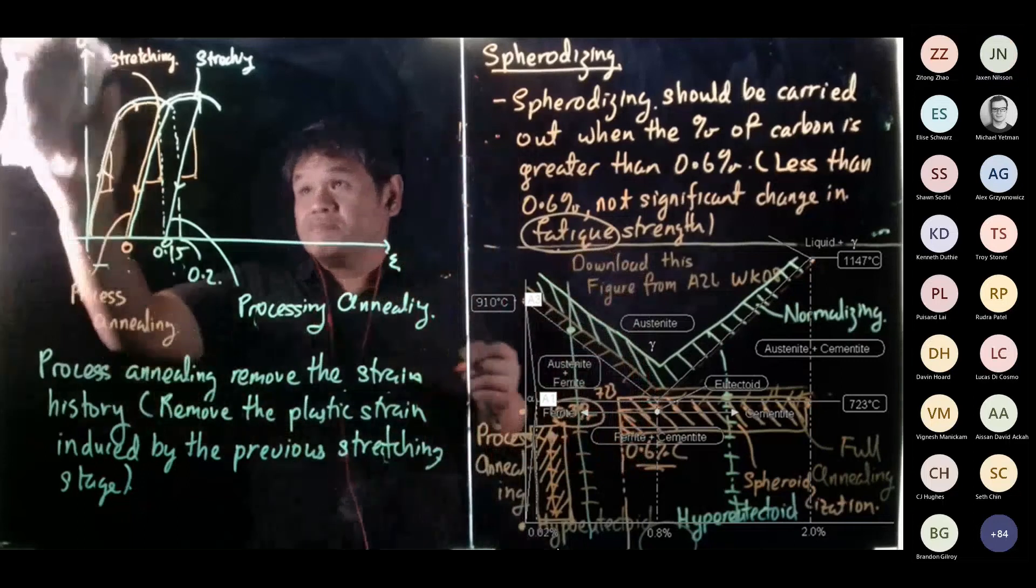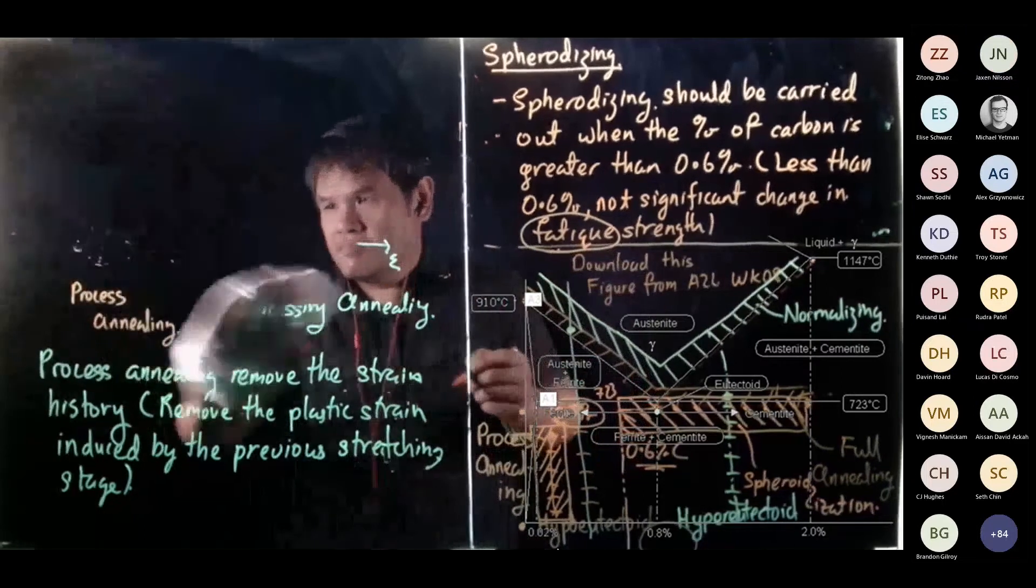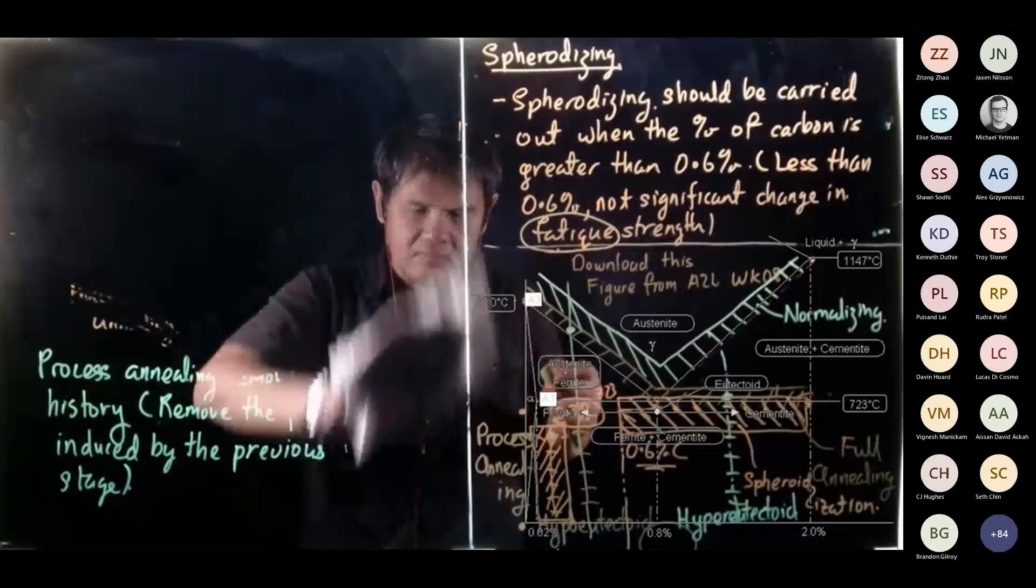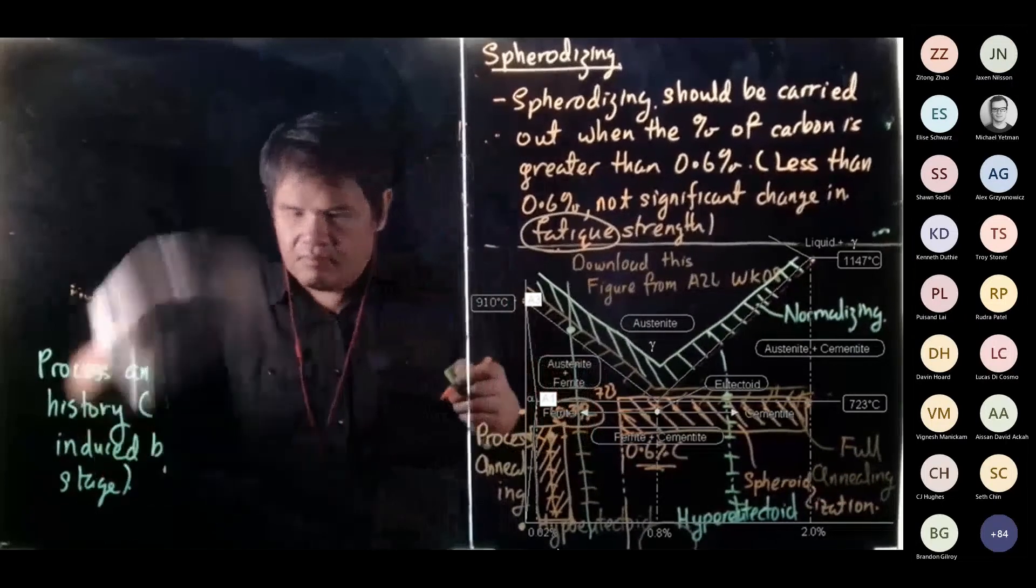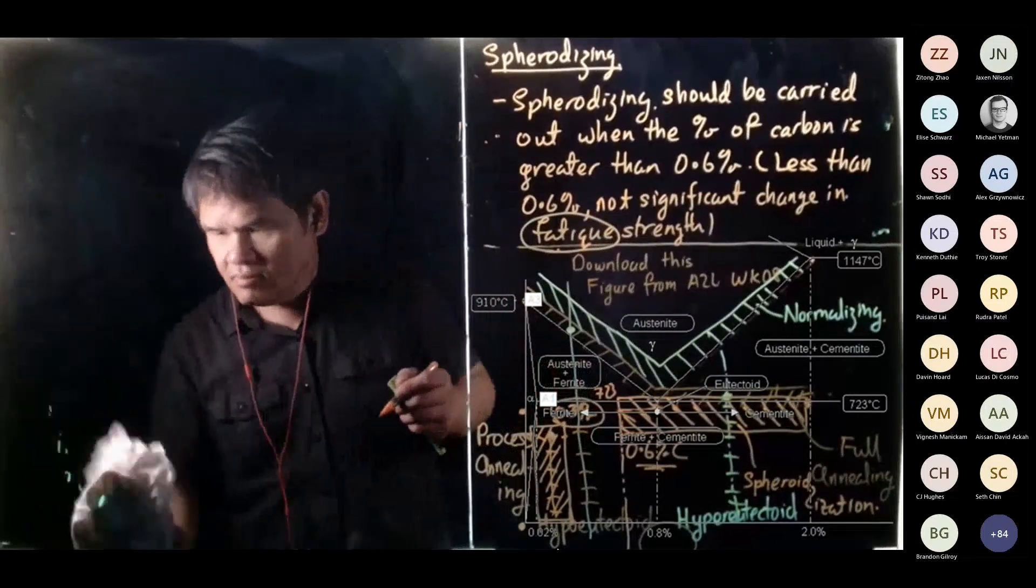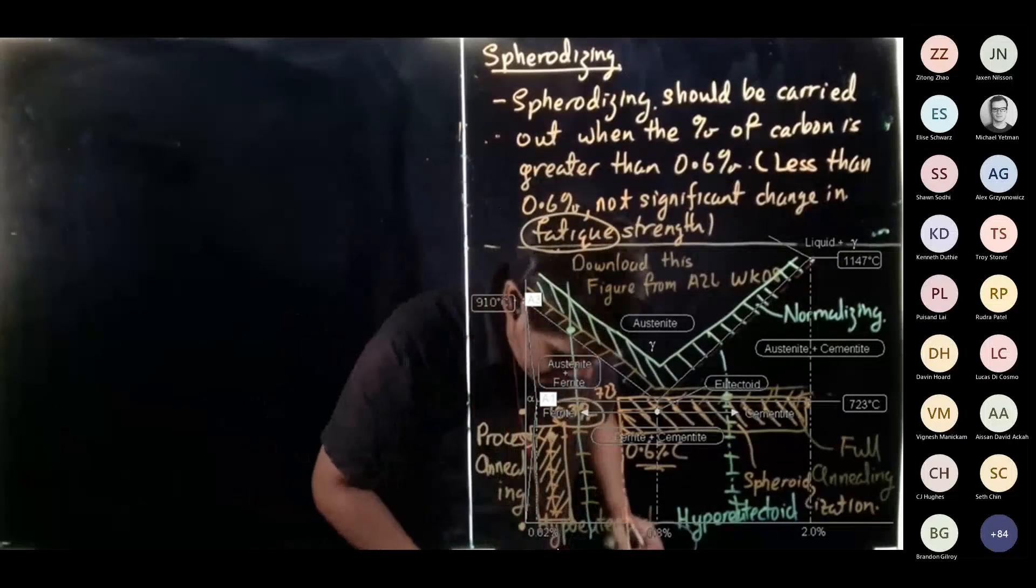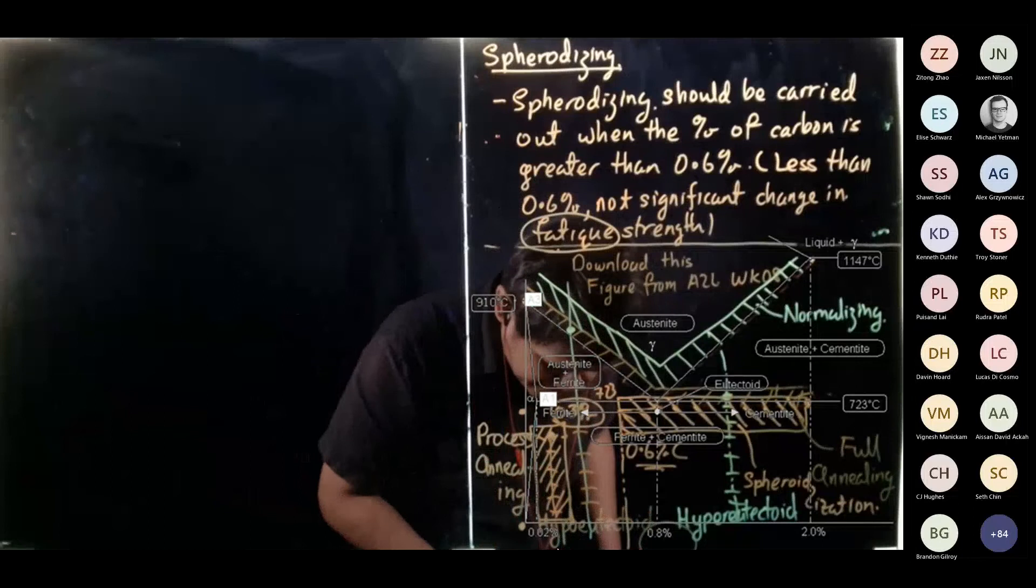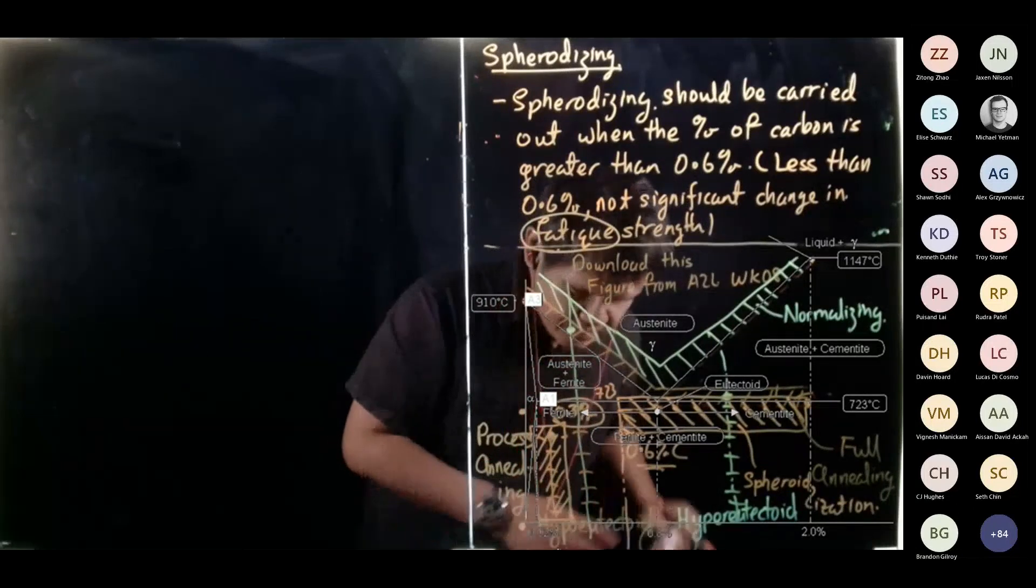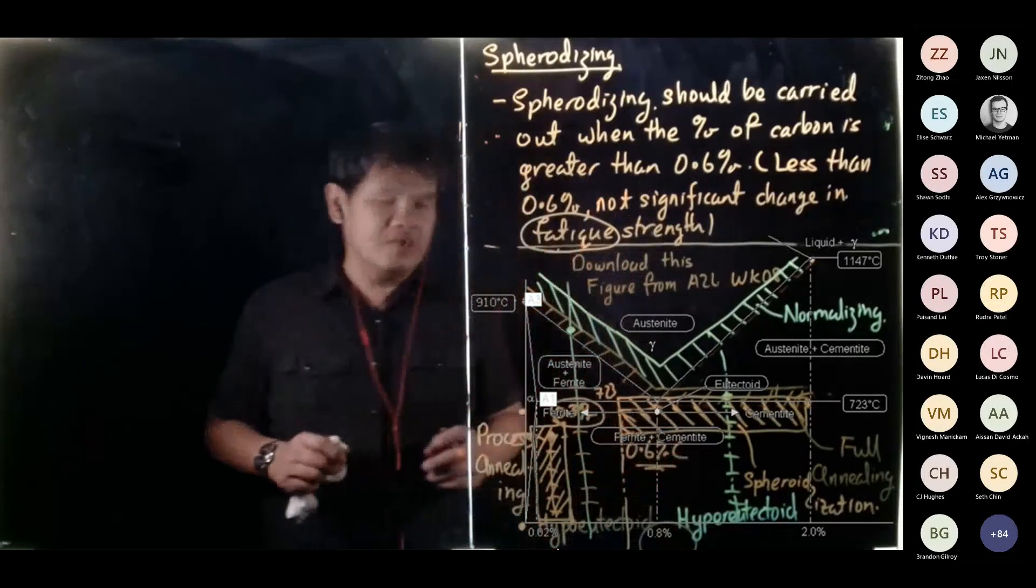Okay, so let me see, is there any question? So when we carry out spheroidizing, we tend to produce a structure.